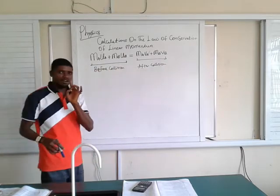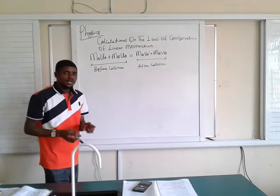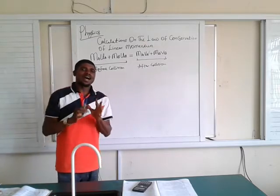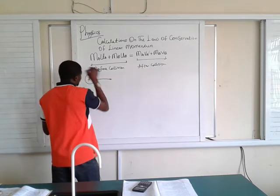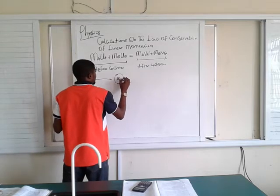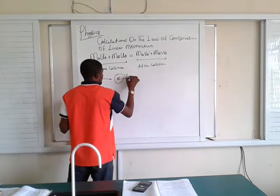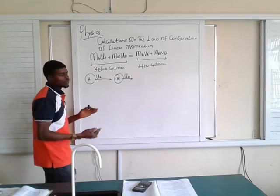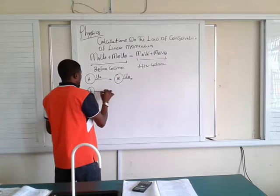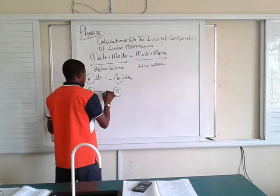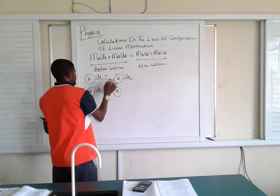Now I want to explain something very important before we begin: the use of signs in this equation. Momentum is a vector quantity and will be treated as such. If body A and body B are moving in the same direction before collision, you use a plus sign. But if before collision A and B are moving in opposite directions, you use a negative sign for one of the terms.